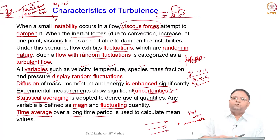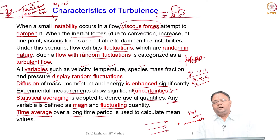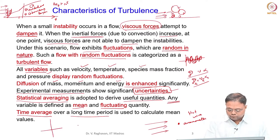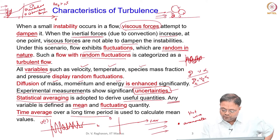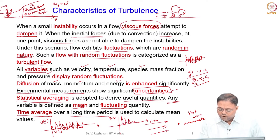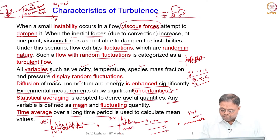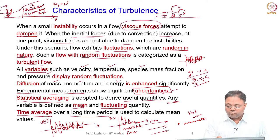If you record the fluctuation in velocity as a function of time and perform a fast Fourier transform, you will get multiple frequencies. In the time domain the oscillation is very chaotic, but in the frequency-amplitude domain you see multiple frequencies present. If it were a simple sine wave, there would be only one frequency; turbulence shows multiple frequencies, which is its main characteristic.